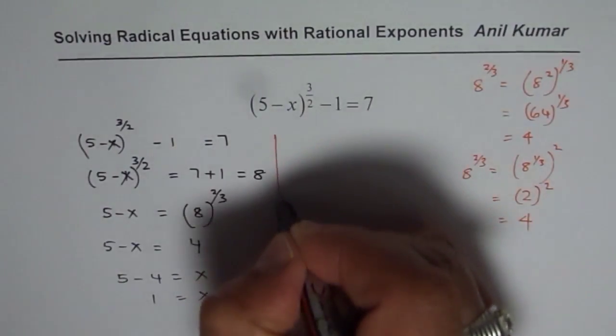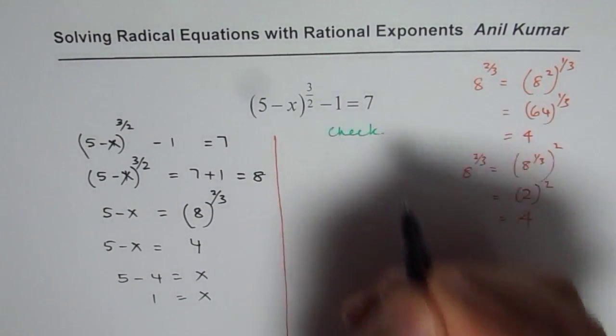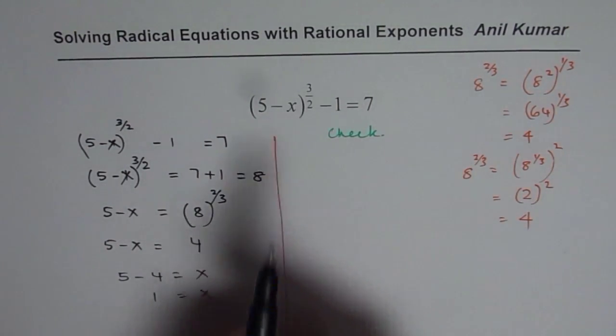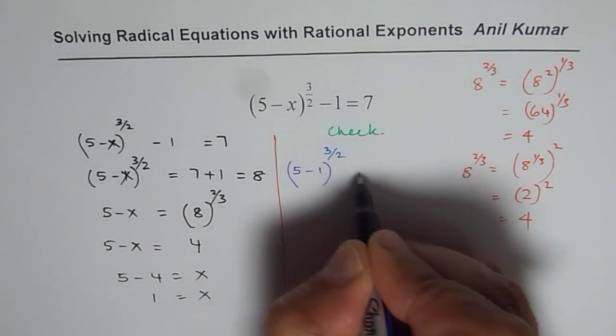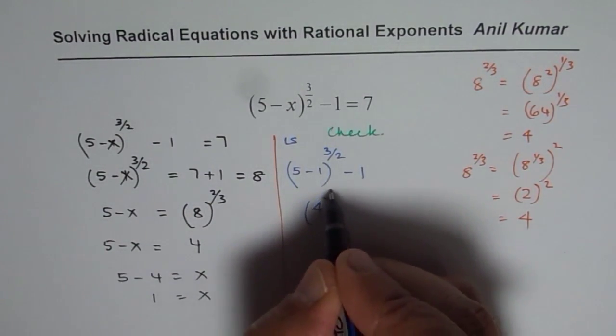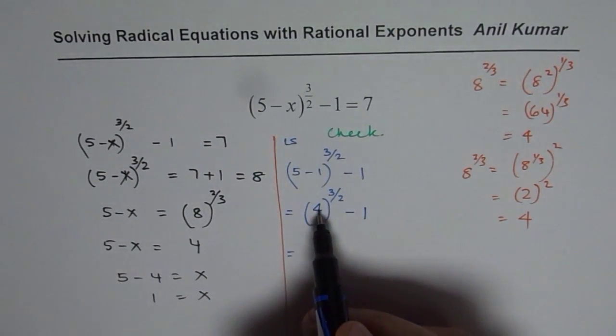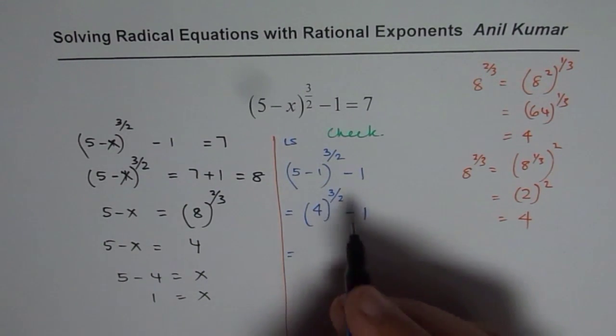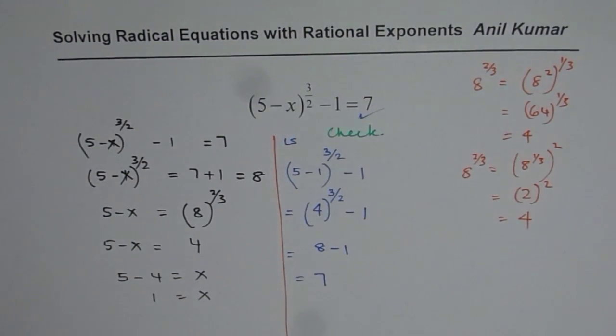Now what you can also do is check your solution. To check means substitute the value you got. So you get 5 minus 1 to the power of 3 over 2 minus 1. Let us start with the left side. 5 minus 1 is 4. So 4 to the power of 3 over 2 minus 1. If you square root 4, you get 2 and cube of 2 is 8. So you get 8 minus 1, which is 7. That is how you solve and check such equations.